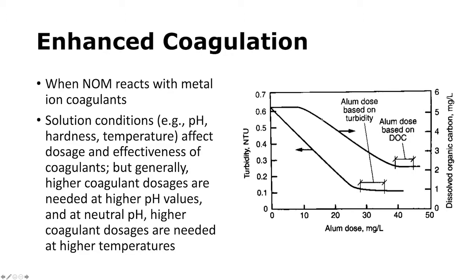Enhanced coagulation describes the situation where natural organic matter removal is the primary objective. Coagulation-flocculation can achieve reductions in both turbidity and natural organic matter concentration, and these two objectives may require different coagulant doses. For example, the alum dose based on turbidity might be around 30 mg/L, but achieving dissolved organic carbon reduction might require a higher dose of around 40 mg/L. Solution conditions such as pH, hardness, and temperature all affect dosage and effectiveness. Generally, higher coagulant dosages are needed at higher pH values and higher temperatures.